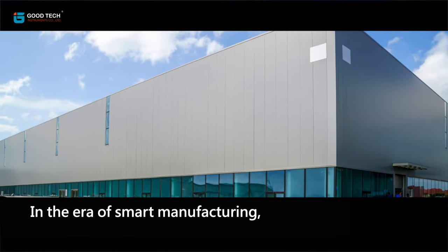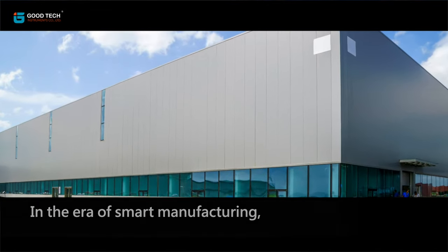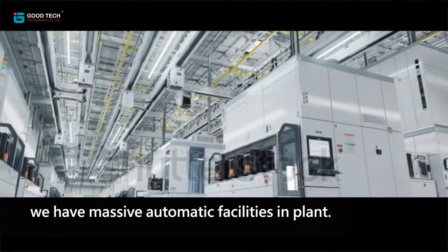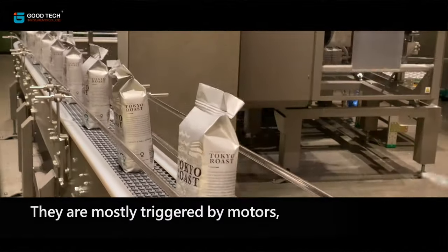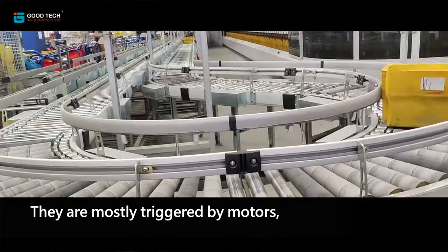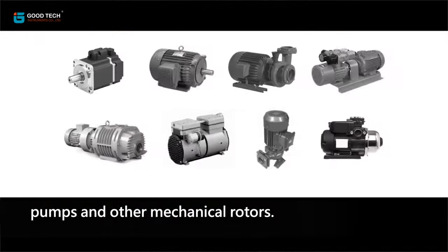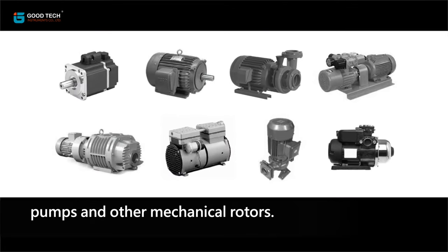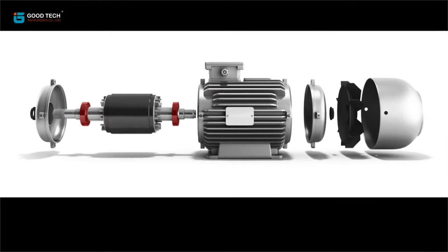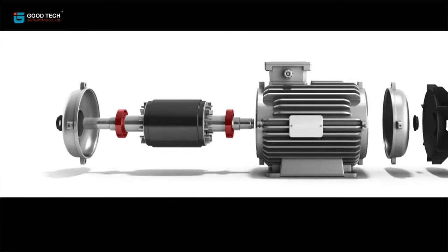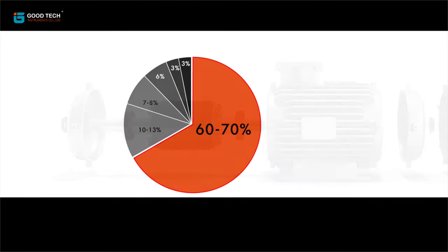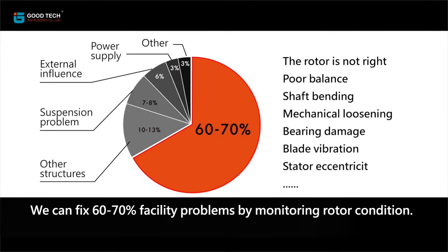In the era of smart manufacturing, we have massive automatic facilities in plant. They are mostly triggered by motors, pumps, and other mechanical rotors. Rotors determine machine condition — we can fix 60–70% of facility problems by monitoring rotor condition.